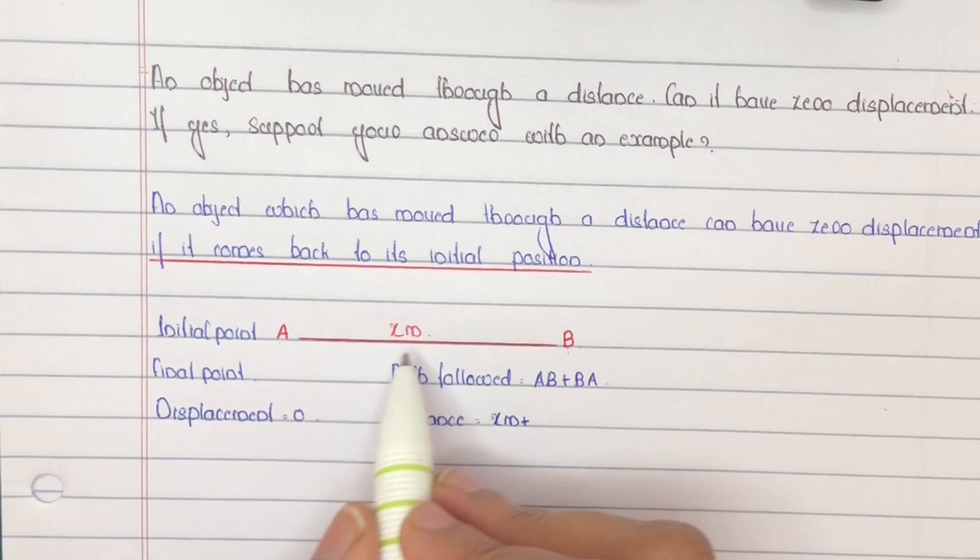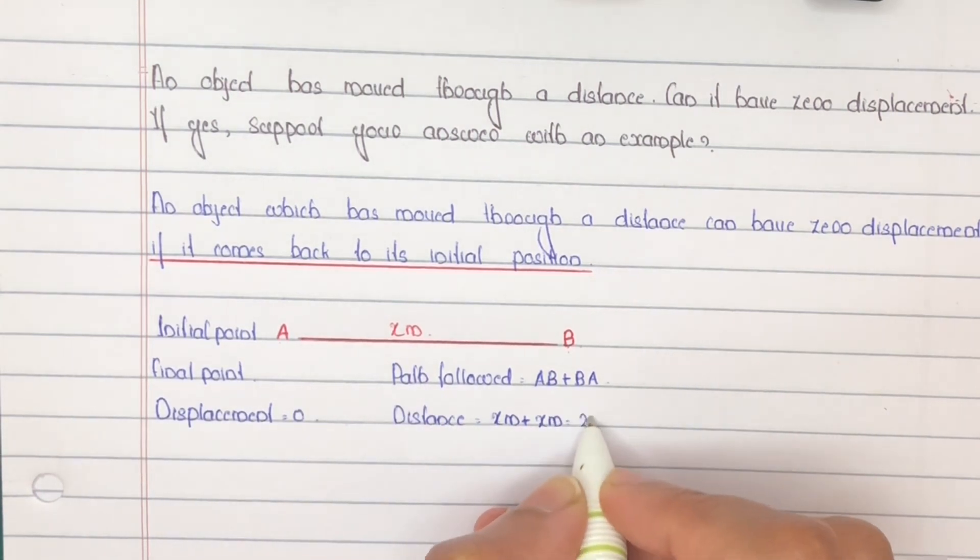Plus B to A, x meters. That is 2x meters total.